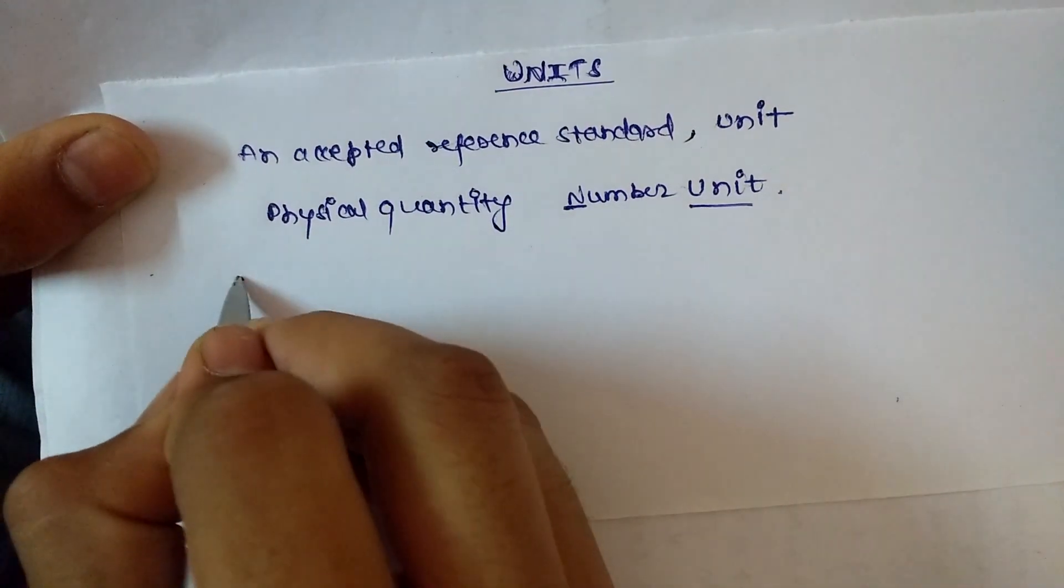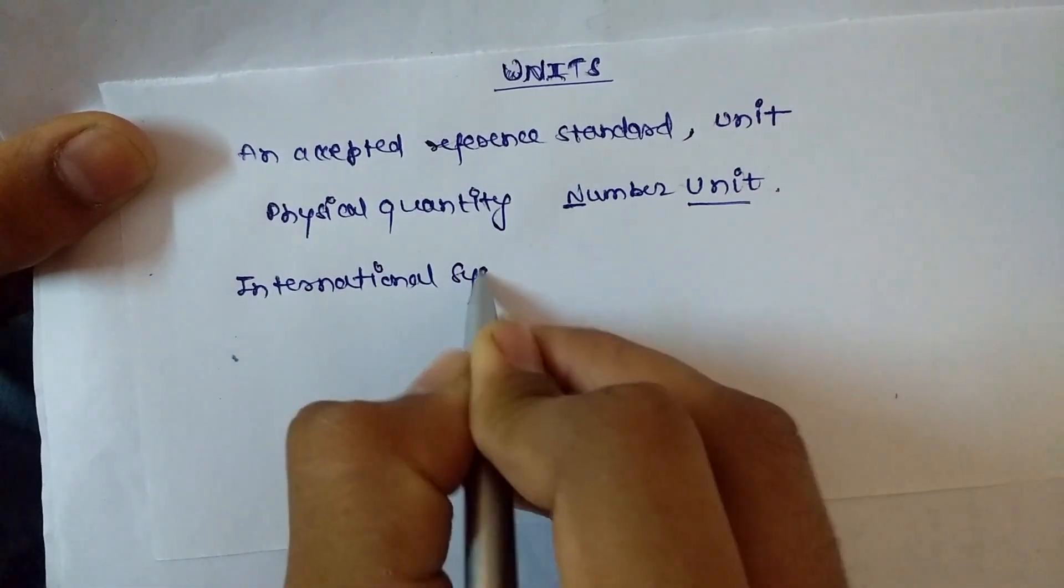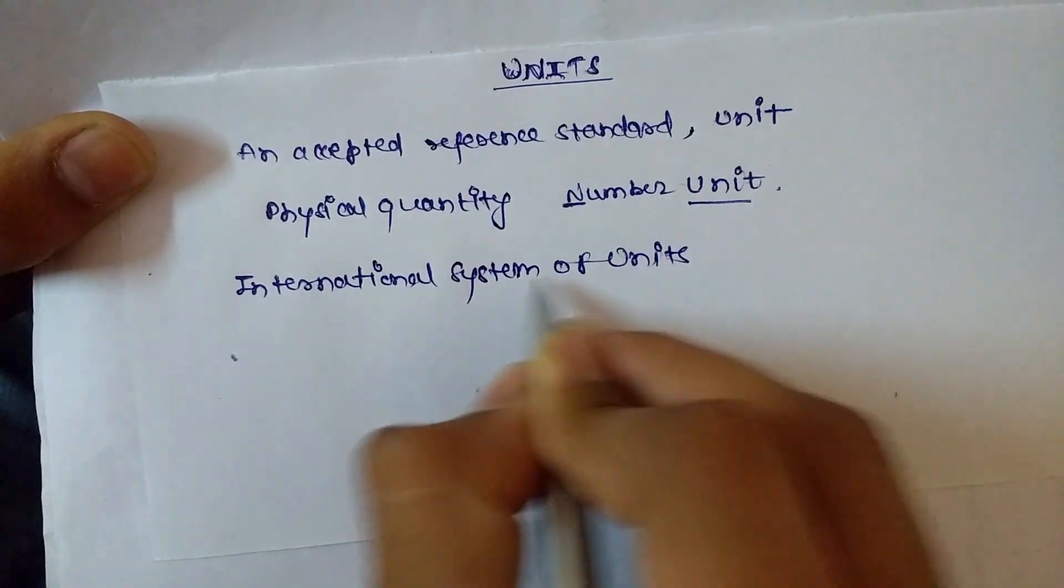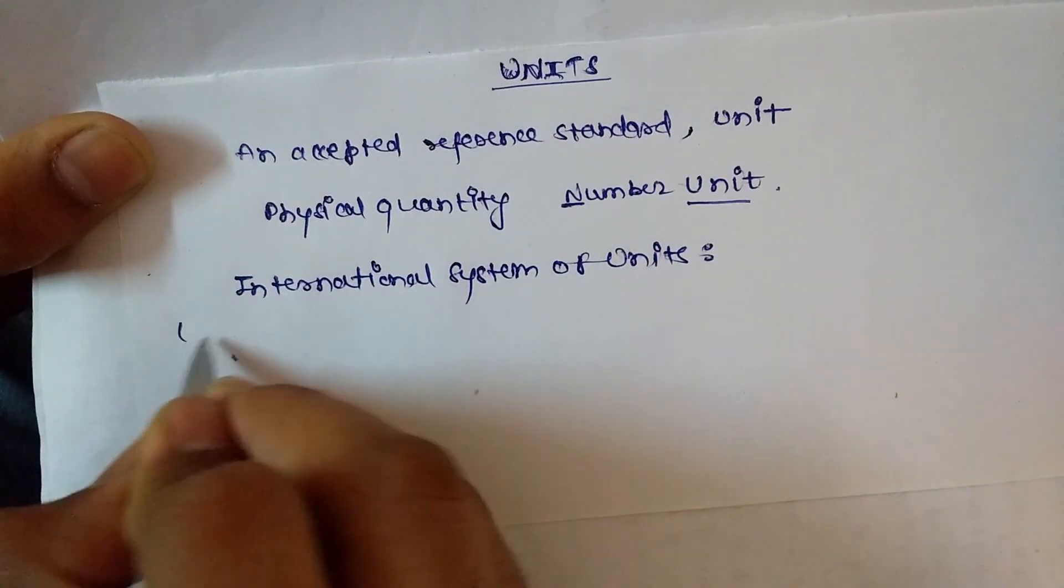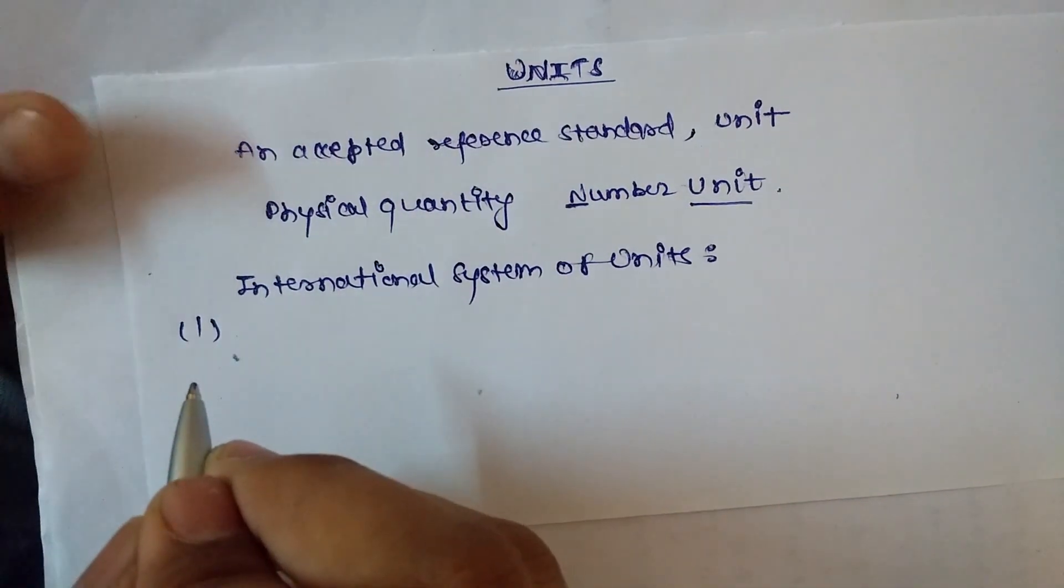There are three popularly known international systems. First, we should know why there are so many international systems. In ancient times, scientists over the world were using different systems of units for measurement because there was no connection between them.